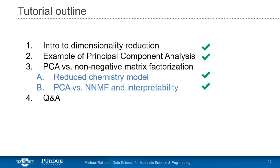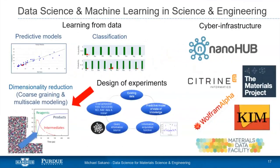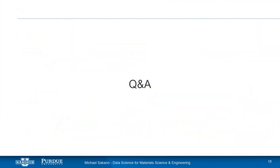I'd like to bring you back to the grand scheme of what we're trying to do: learning from data using cyber infrastructure repositories and cloud computing. We've created predictive models, done classification, and in this session looked in great detail at dimensionality reduction using both PCA and NMF — all to help guide the design of experiments. Thank you for your time, and please feel free to ask questions.